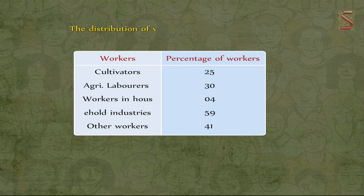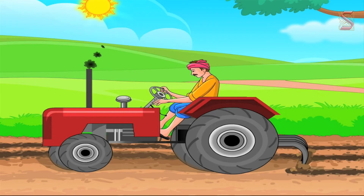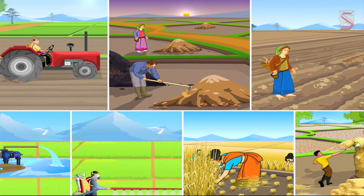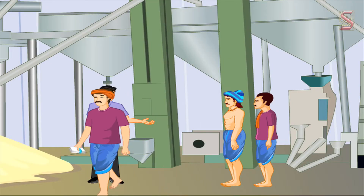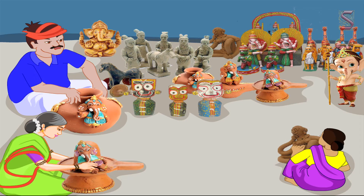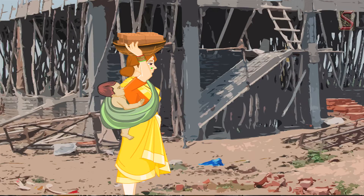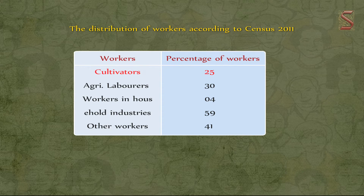The working population refers to people aged between 15 to 59 years who may work the whole year or during various parts depending on work availability. Notably, the unpaid work of homemakers does not feature in this data. According to census 2011, farmers who farm and supervise owned or rented lands are cultivators; agricultural laborers work on others' farms for wages in kind or cash; workers in household industries include beedi workers, potters, weavers, and toy makers; and other workers include those in factories and casual labor.